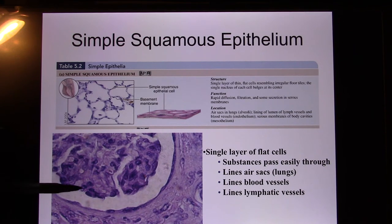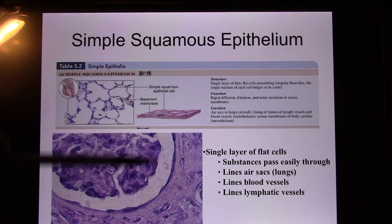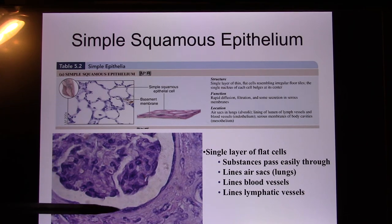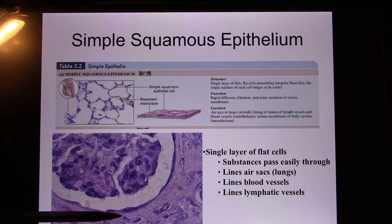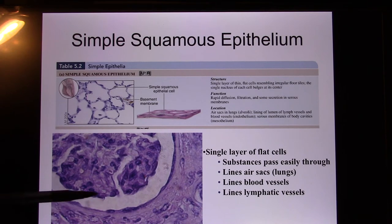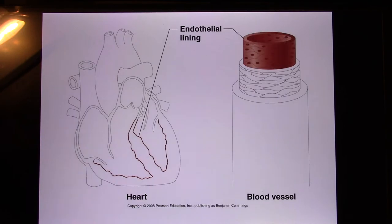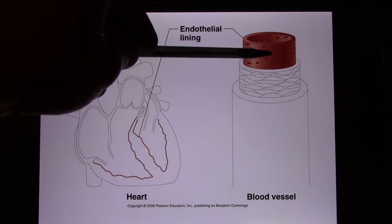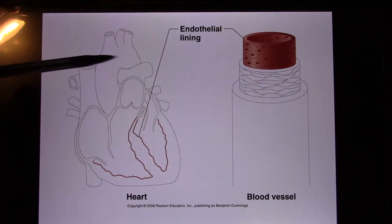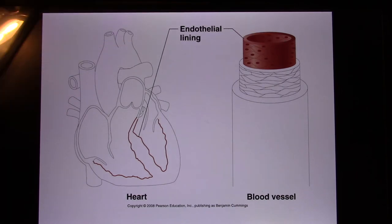Simple squamous epithelium is also found in the kidney. The kidney has many nephrons, and the glomerulus — the head part of the nephron — is lined with simple squamous epithelium: one layer, flat. It is also found in the inner lining of blood vessels. Capillaries have only this single layer of simple squamous epithelium.